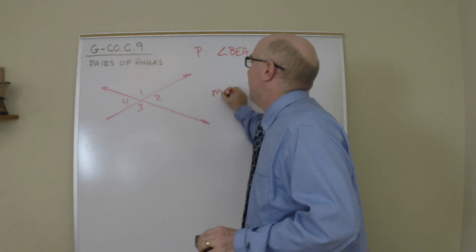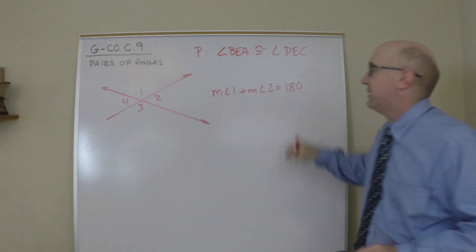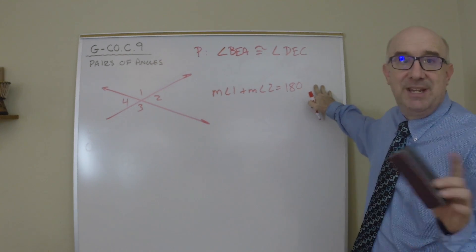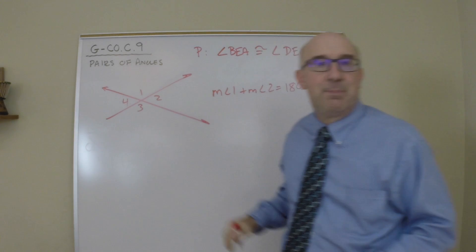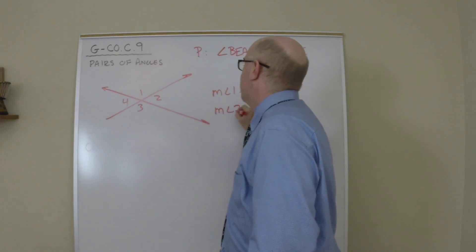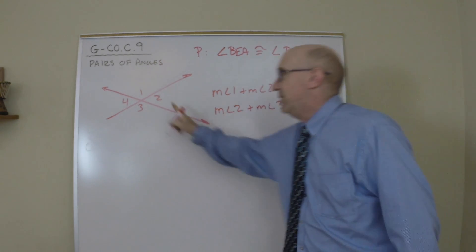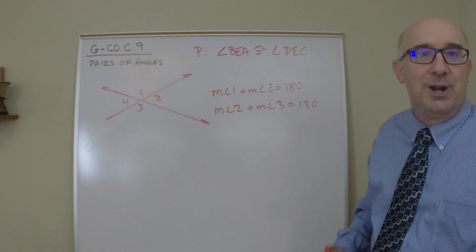You could say that angle 1 and angle 2 equaled 180 degrees. And I'm going to be quick on this one. The reason I know that is because they're a linear pair. See the linear pair? Supplement angles that are adjacent. It would also be true that 2 and 3 equal 180 degrees because they are also a linear pair. And therefore they're supplements.